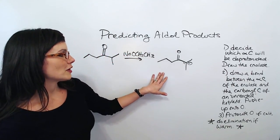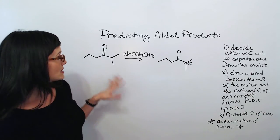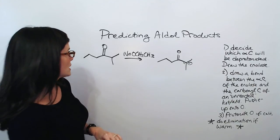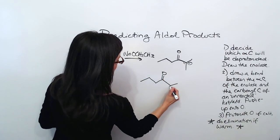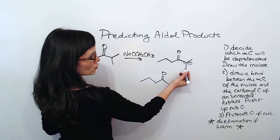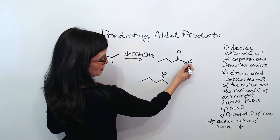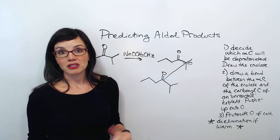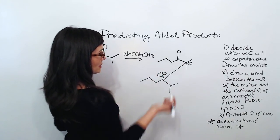Then I need to draw my other unreacted ketone or aldehyde. And since this is the only ketone or aldehyde that I have, this is the one I'm going to use. So I'm going to redraw this guy just a little bit closer. And I'm going to draw a bond between this carbon and my carbonyl carbon. So that means I can just draw a straight line that can represent a really long, ugly bond. And I can push these electrons up onto the O.